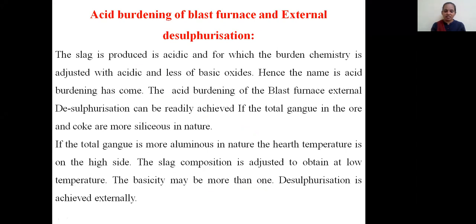Acid burdening of blast furnace — what does it mean? The charge material contains a higher silica percentage, so it is acidic burdening. The product we get is rich in silica percentage, it is siliceous in nature. So that is called an acidic process. The slag produced is acidic, and the burden chemistry is adjusted with acidic and less of basic oxides.